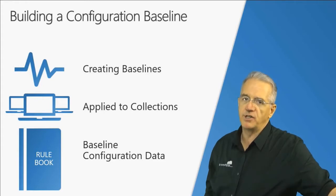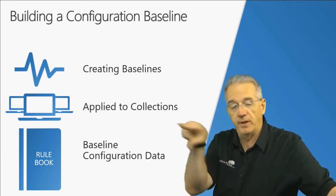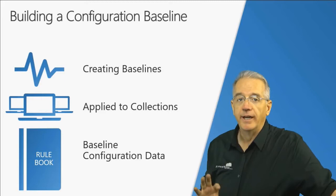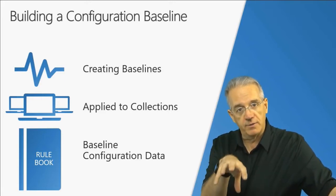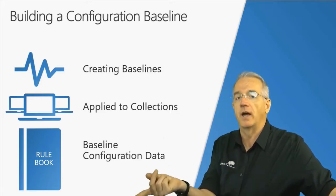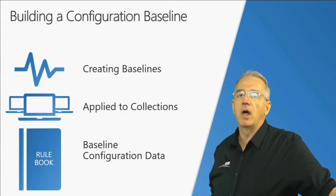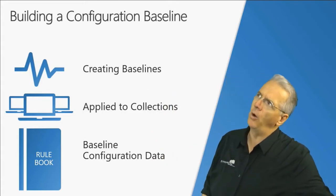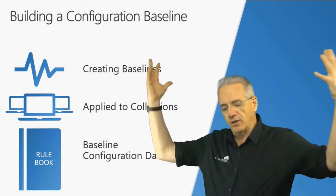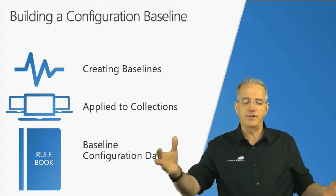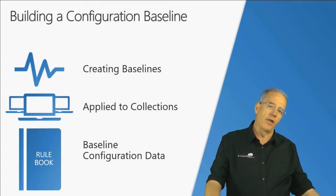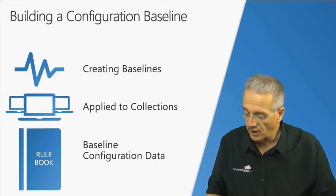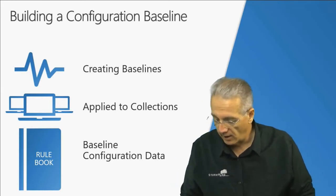Or I can manually assign it and say this is for sales — we're going to designate this machine as a sales machine and directly assign it to a collection. Then I can apply this configuration baseline to that collection. It will check: do you have the applications? And I get all the reporting back that tells me whether or not all my sales machines are good to go.